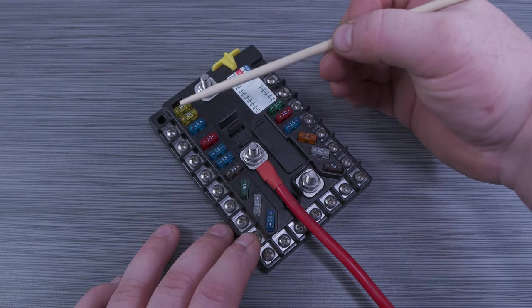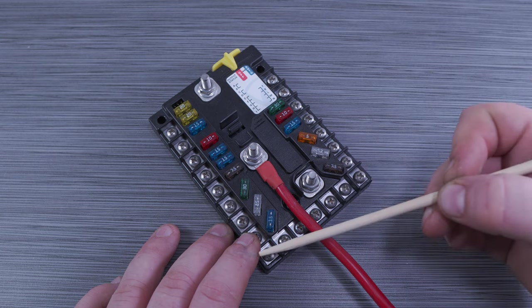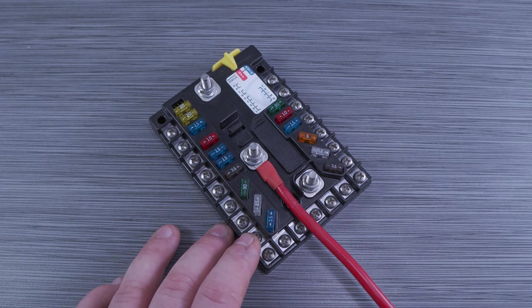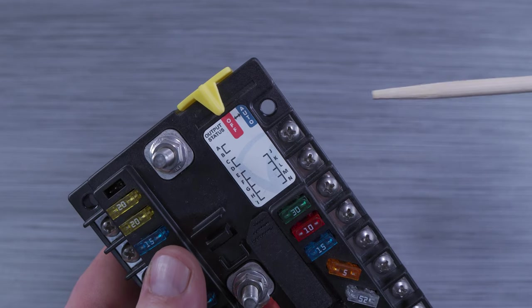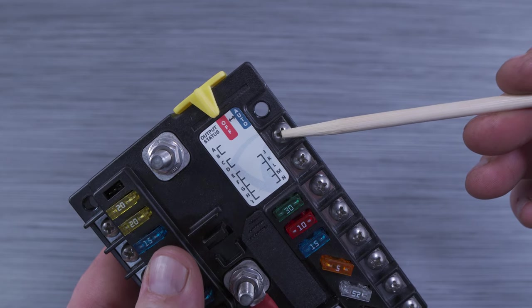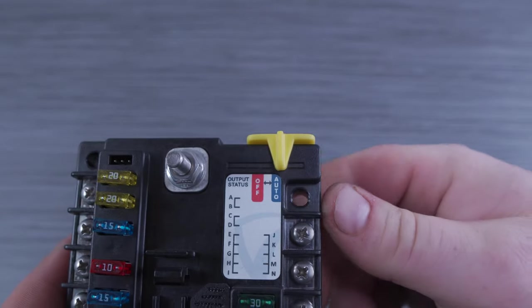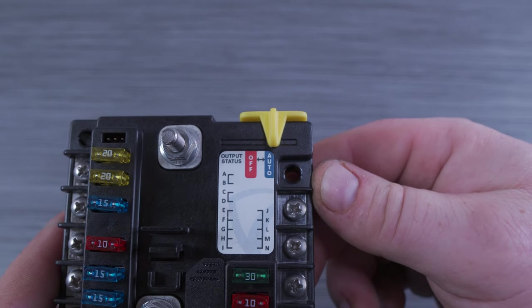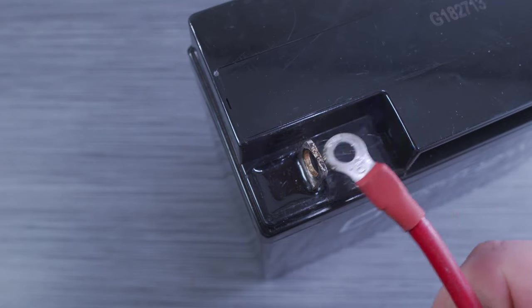These are the fuse slots for the positive outputs on either side and then at the bottom here terminal numbers 1 through 7 are for your ground returns. Terminal number 9 is for a positive engine on signal input. Up here we have the LS shutoff switch. Its function is to turn off the output so that you can safely conduct any maintenance and not have to worry about any shorts occurring.